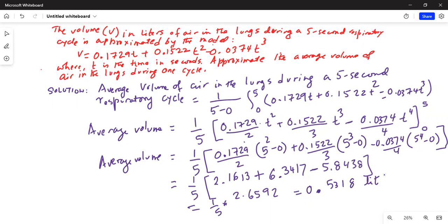Yes, this is correct. The answer is 0.5318 liters. This is the average volume of air in the lung during a 5 second respiratory cycle.